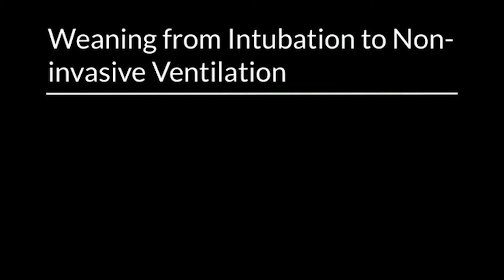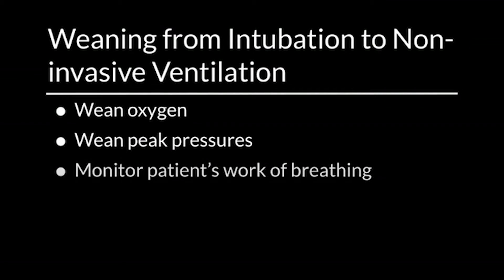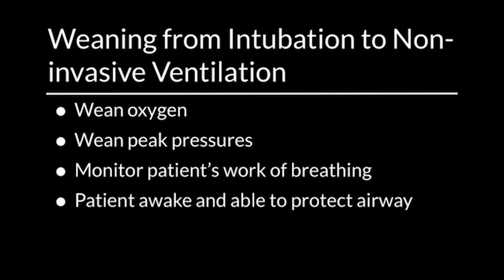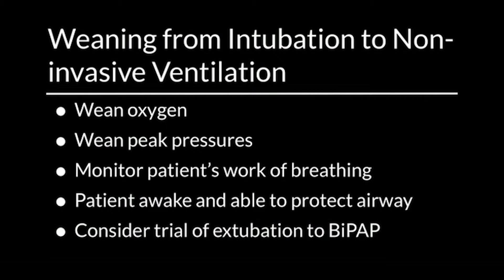The question is how do you wean from positive pressure through a translaryngeal airway to non-invasive? That is a very stylistic process with no clear guidelines. If you take a stepwise approach — coming down on oxygen, coming down on peak pressures, and watching the patient's work of breathing, degree of tachypnea, and other cardiopulmonary indices — you titrate accordingly. When they're awake and able to protect their airway, that is a good indication to trial extubating to BiPAP. Conversely, if they lose consciousness, lose airway reflexes, or escalate to very high oxygen levels — greater than 60-70%, certainly 100% — you may need to transition from non-invasive to a translaryngeal airway.